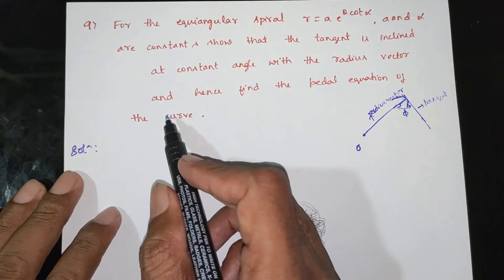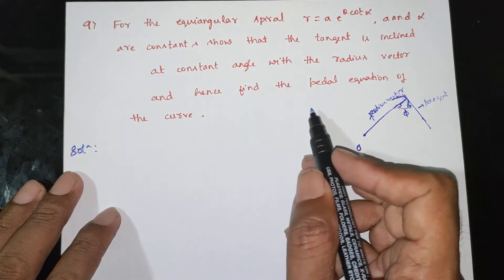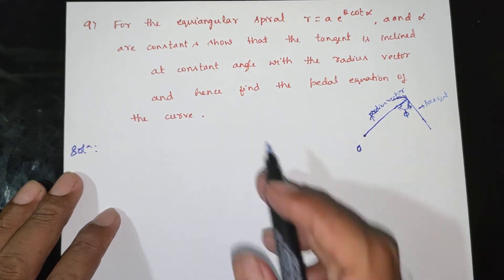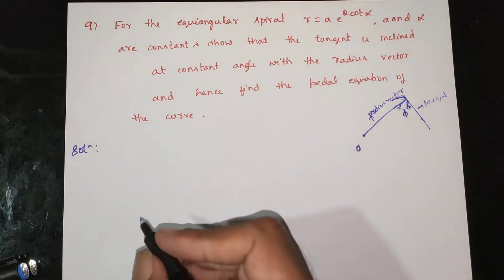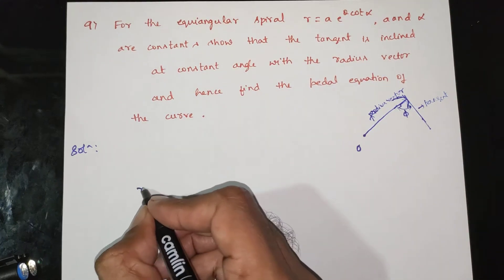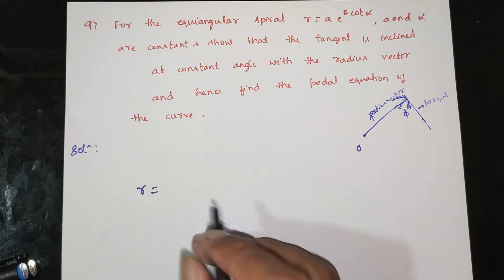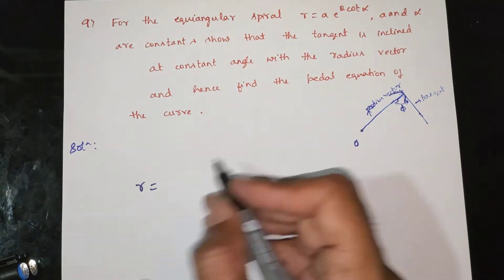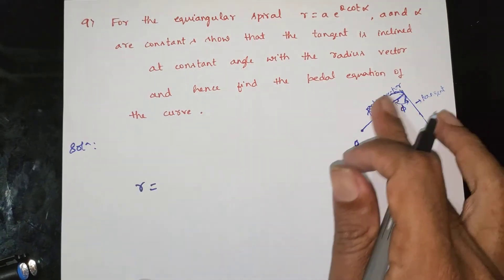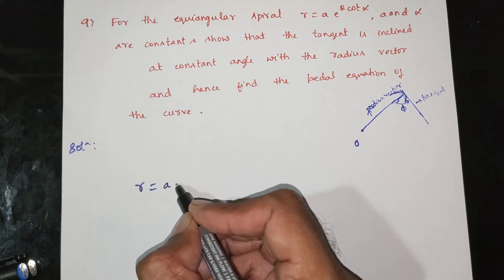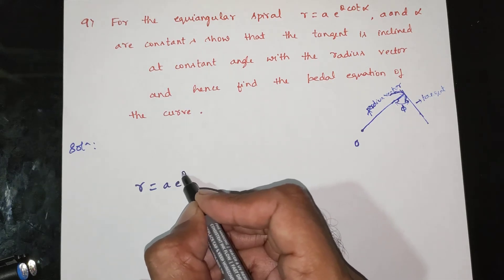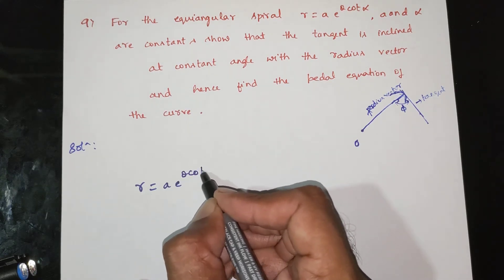And hence find the pedal equation of the curve. This is easy to do. R is equal to A into E power theta cot alpha.